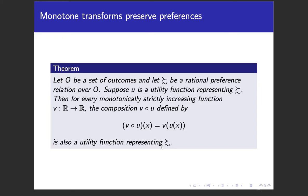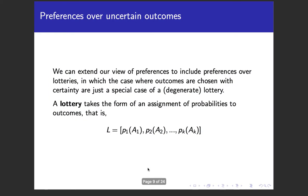This holds because preferences are an ordinal property, where all that matters is their relation to one another — greater than, less than, or equal to when working in the reals. In game theory and topics related to risk, we care a lot about preferences over outcomes that are uncertain.